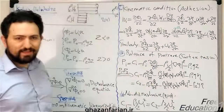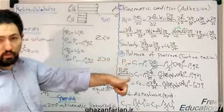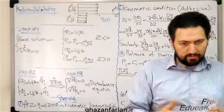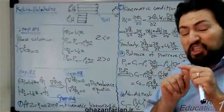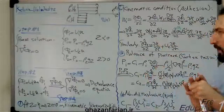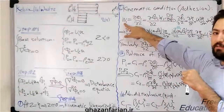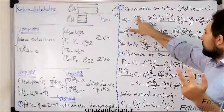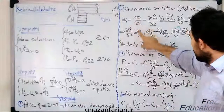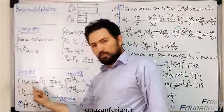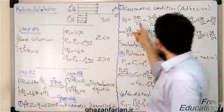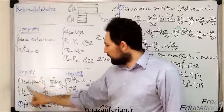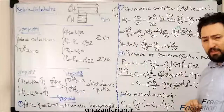The second item in the linearization is the kinematic condition or the adhesion condition. When a disturbance appears, the interface between the two fluids deforms and fluid particles near the interface remain attached to it. So w1, the vertical velocity component at the interface, equals the partial derivative of phi-1 with respect to z by definition of the potential function. Taking the partial derivative of phi-1 with respect to z, the first term vanishes since x and z are independent, leaving only the partial derivative of phi-hat 1 with respect to z.